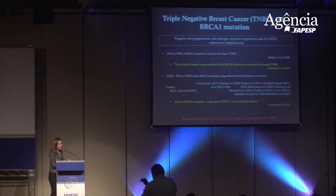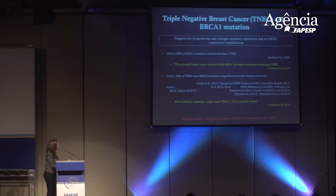Triple negative breast cancer is a subtype that is negative for progesterone and estrogen receptor expression, and also for HER2 expression and amplification. There is a strong connection between BRCA1 and triple negative from both sides. Women who carry BRCA1 germline mutations predominantly develop triple negative breast cancer — literature shows 60 to 80% of BRCA1 mutation carriers develop triple negative, and in our study we found 72%, a very similar rate.